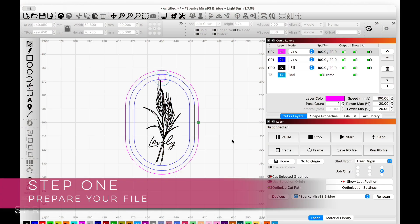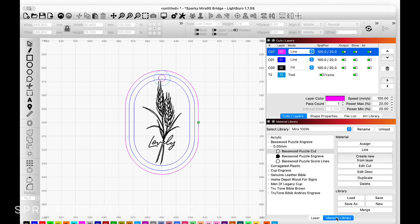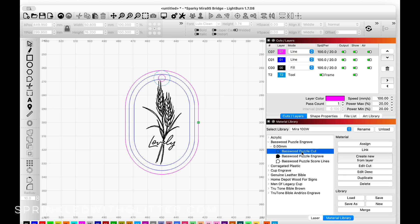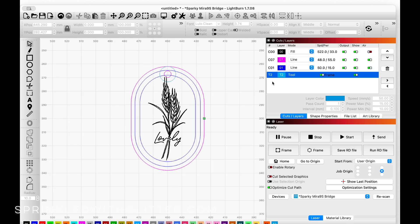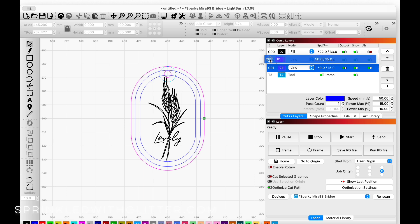The first step is to prepare your file. I'm here in Lightburn where I've designed this adorable keychain. Part of preparing your file is making sure that each of your layers has the correct settings, so I'm going through and assigning the correct settings for each of these layers from my material library. Another part of preparing your file is making sure that you check your order. You'll want to make sure that you're doing your scoring and your engraving first in most cases, so I'm just sliding the layers into the proper order.